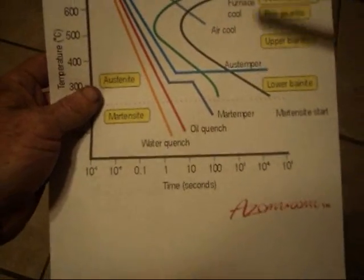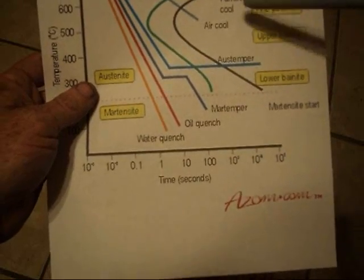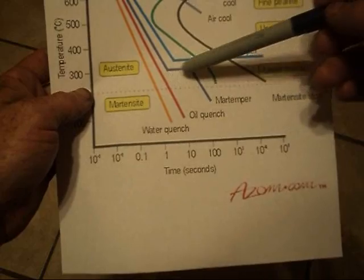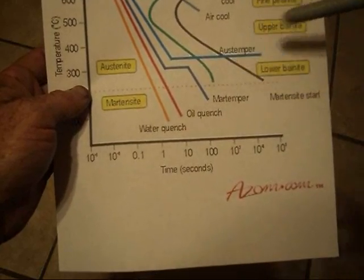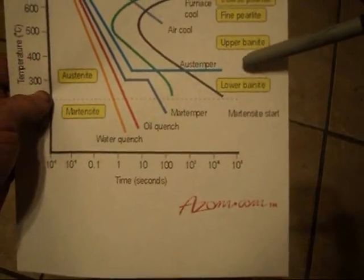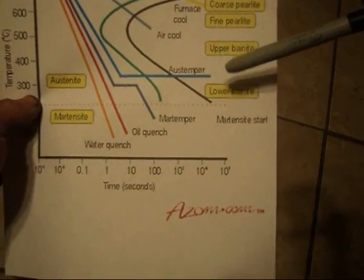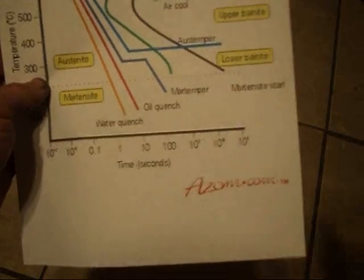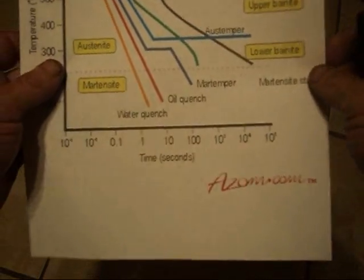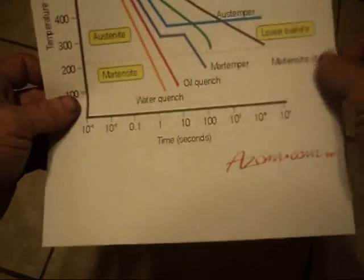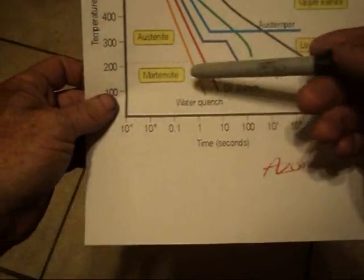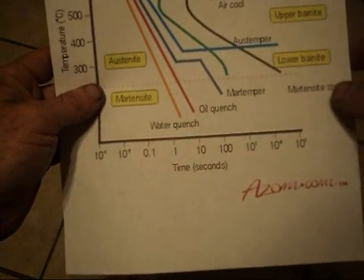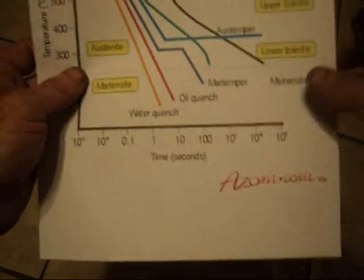If you hold that temperature right above martensite start, you'll get another structure of steel called bainite. You can get upper or lower bainite, which is a really, really good compromise between hardness and toughness. It's an alternative to a tempered martensite. And it really works good on a lot of blades, especially big blades.